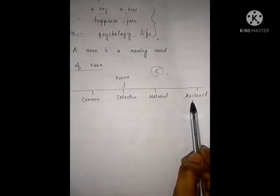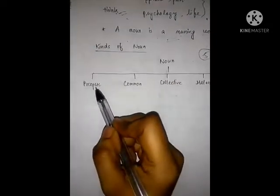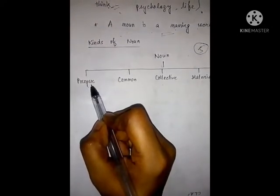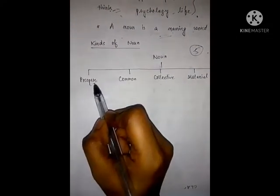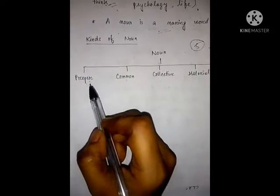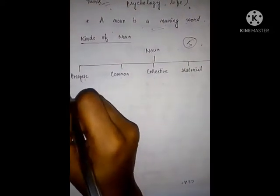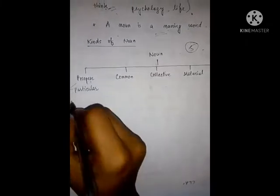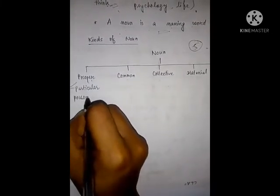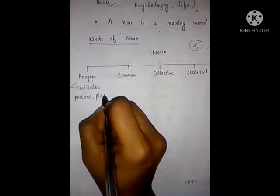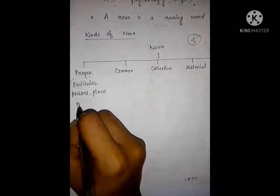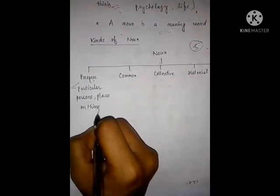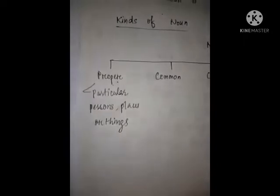First of all, we will see proper noun. Proper nouns are the names of particular persons, places, or things. This is proper noun.